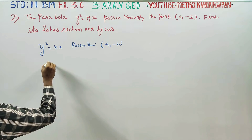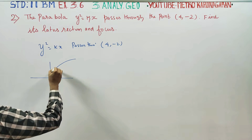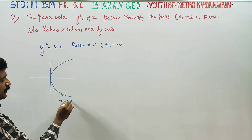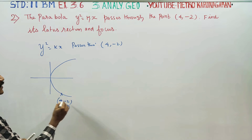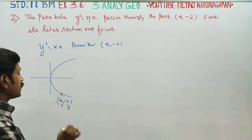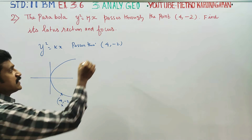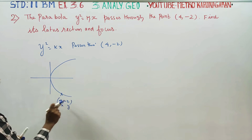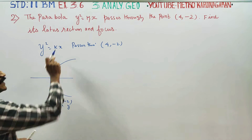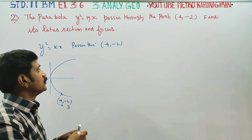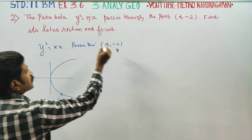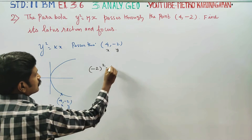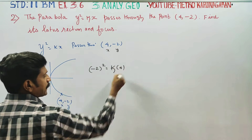For this parabola, since it passes through the point (4, -2), we substitute x = 4 and y = -2 into the equation y² = kx.